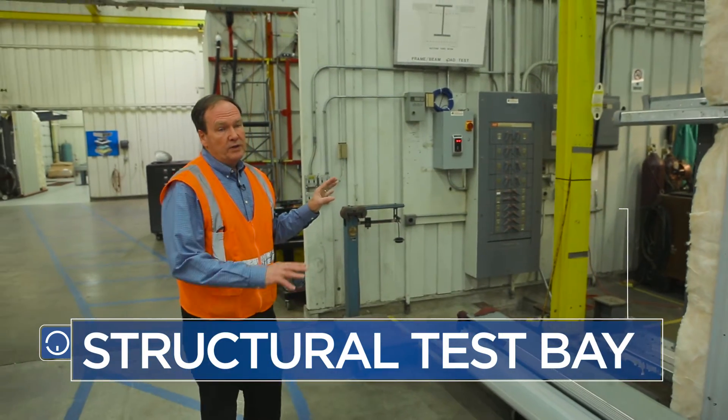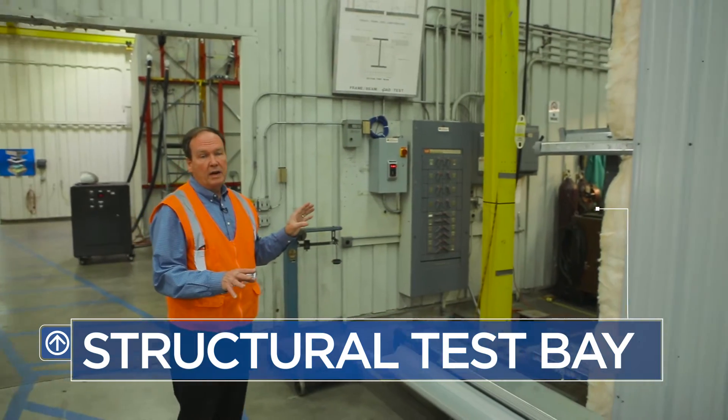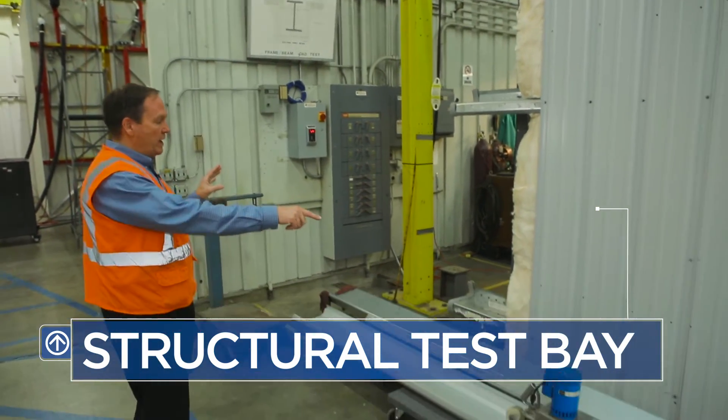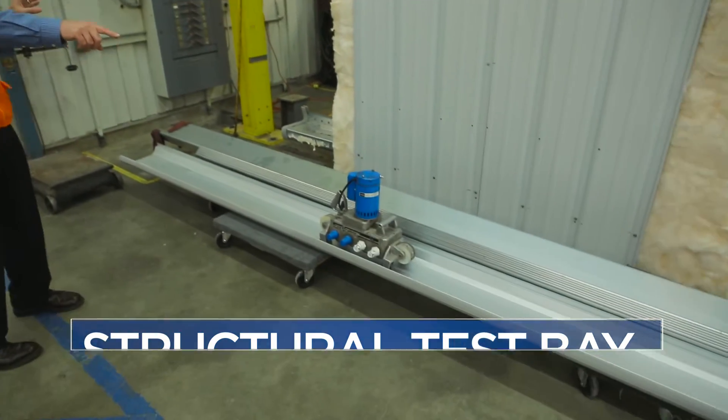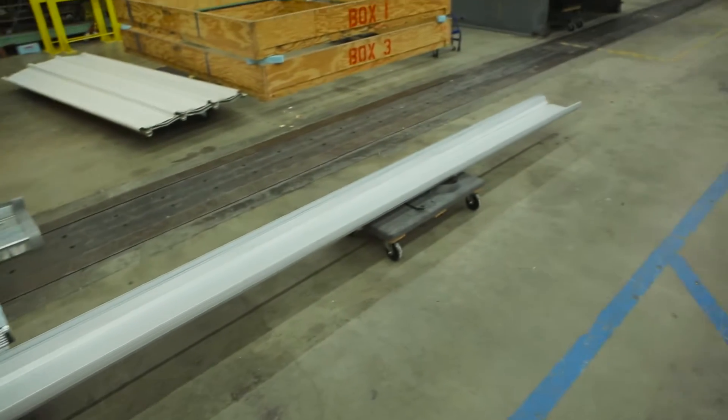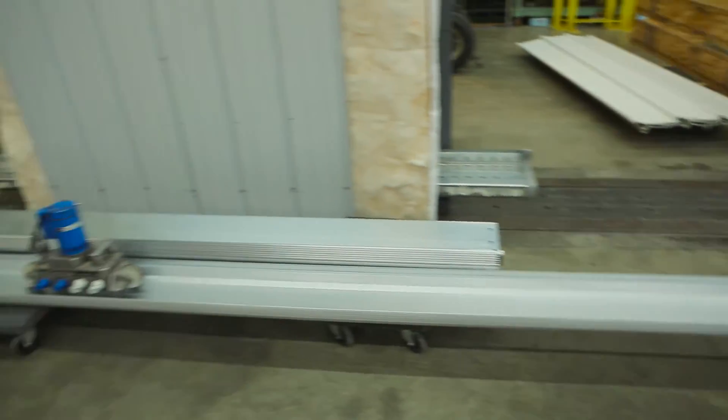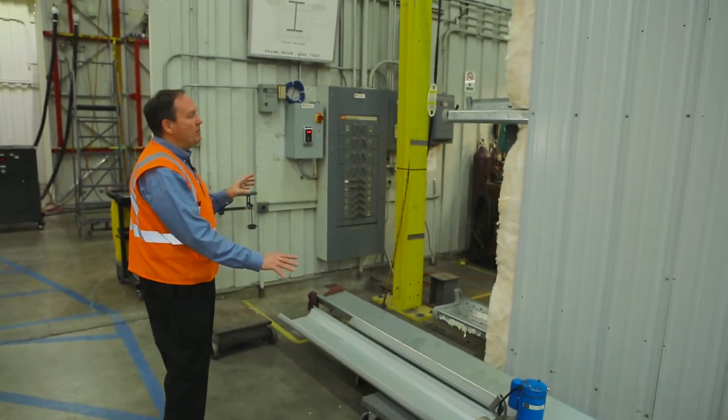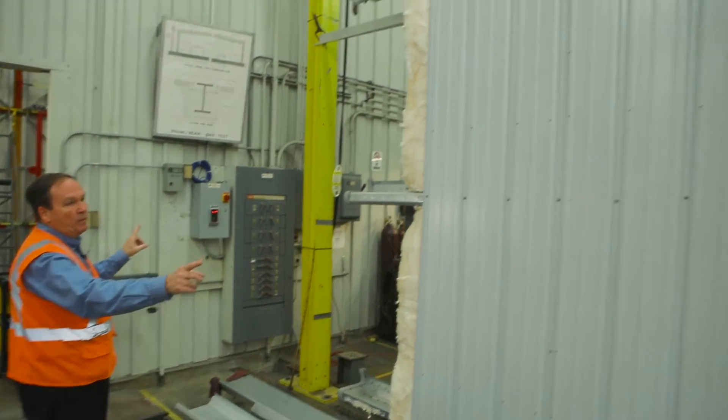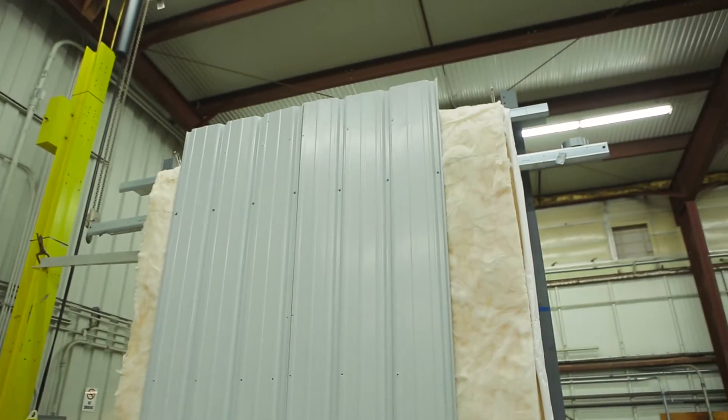Here we have our structural test bay and also our product mock-up area. Buried in the floor out here is a W36 by 300. That's a steel beam that's three feet deep, weighs 300 pounds per lineal foot. On top of that we're able to assemble a small building up about 60 foot wide and 16 foot high.